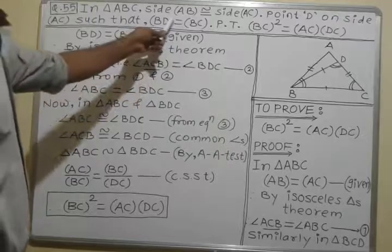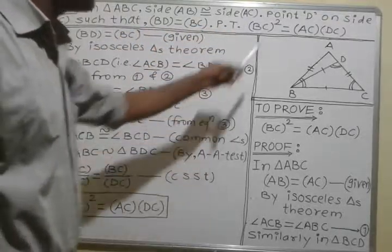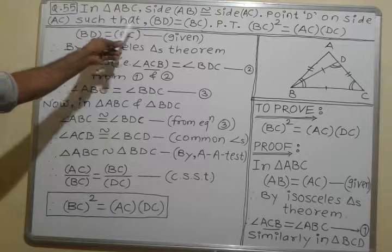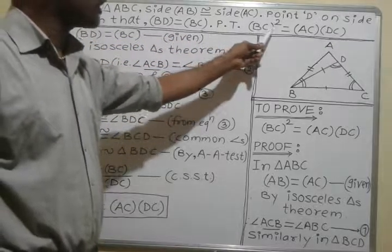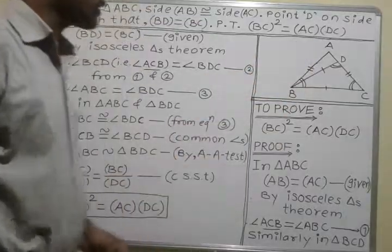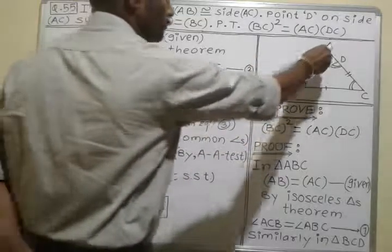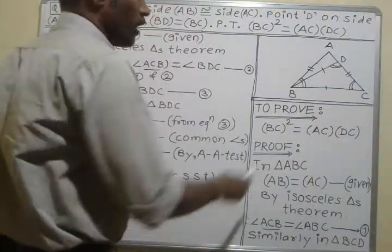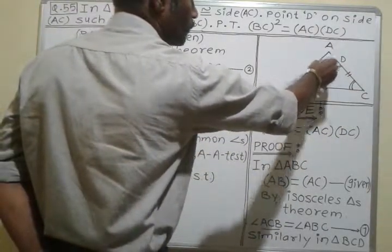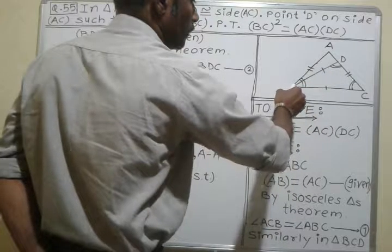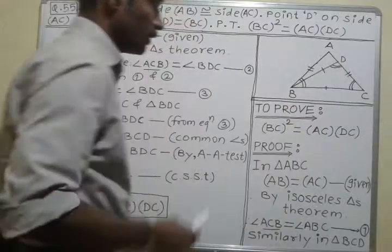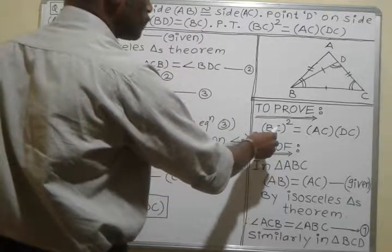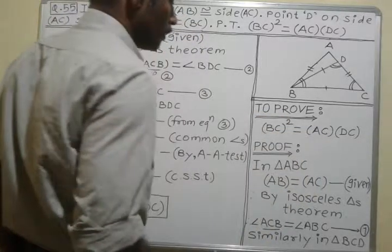In triangle ABC, side AB is congruent to side AC. Point D is on side AC such that BD is equal to BC. We need to prove that BC squared is equal to AC into DC. Here is the figure — in triangle ABC, AB is congruent to AC, and D is any point on side AC such that BD equals BC. We have to prove BC square is equal to AC into DC.